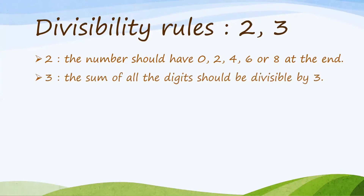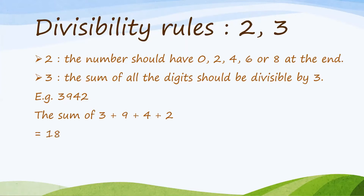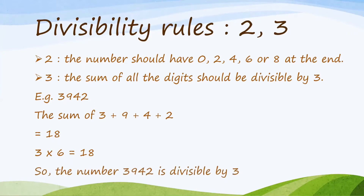The Divisibility Rule of 3 is that the sum of all the digits should be divisible by 3. For example, 3942: the sum of 3 plus 9 plus 4 plus 2 is equal to 18, and 3 times 6 is 18. So, the number 3942 is divisible by 3.